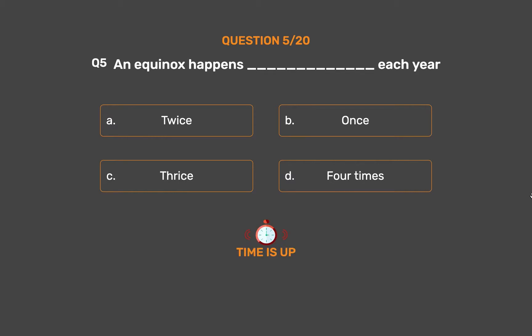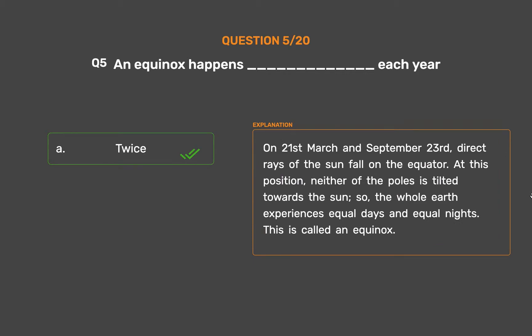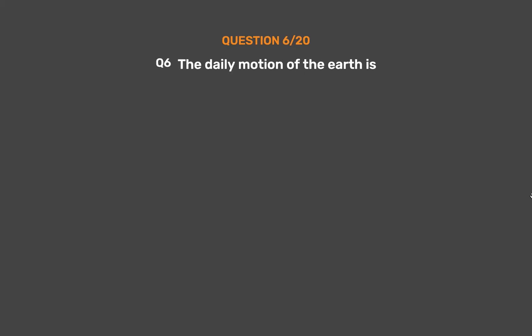The correct answer is Option A: Twice. On 21st March and September 23rd, direct rays of the Sun fall on the equator. At this position, neither of the poles is tilted towards the Sun, so the whole Earth experiences equal days and equal nights. This is called an equinox.